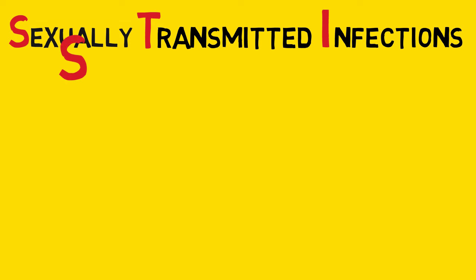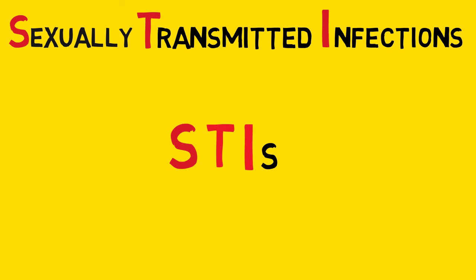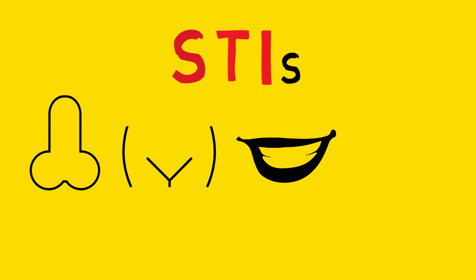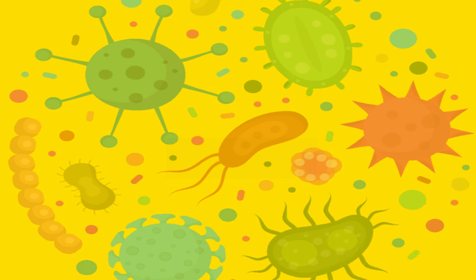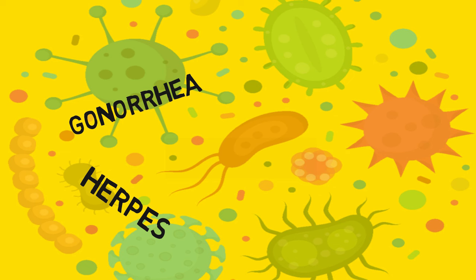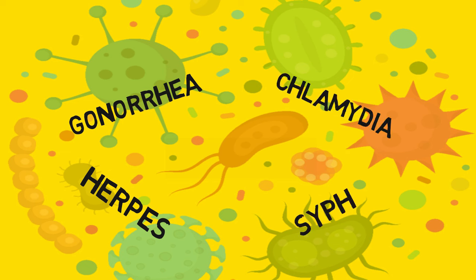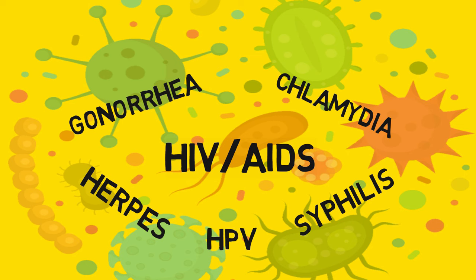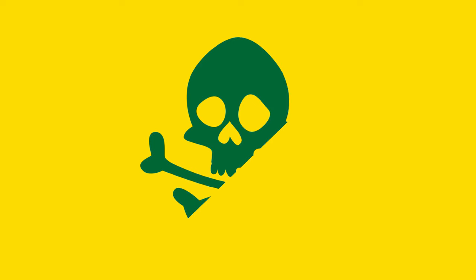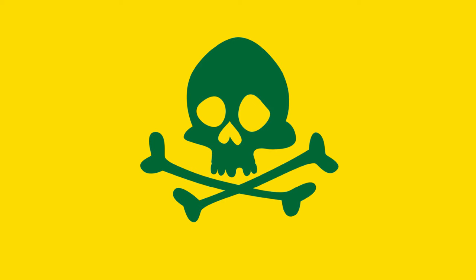Sexually transmitted infections, also known as STIs, are diseases and sicknesses that you can get from any type of sexual activity. There are many different diseases you can get. Some you may have heard of include gonorrhea, herpes, chlamydia, syphilis, HIV, AIDS, and HPV. Some of them can be really bad and even lead to death if not treated.